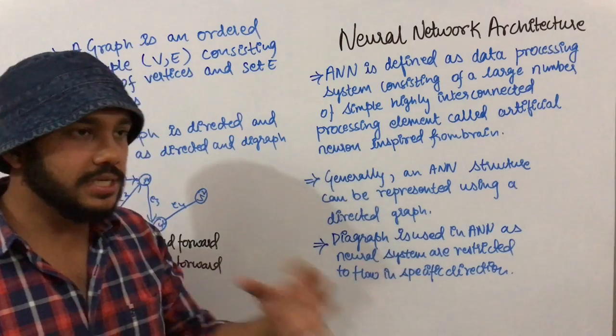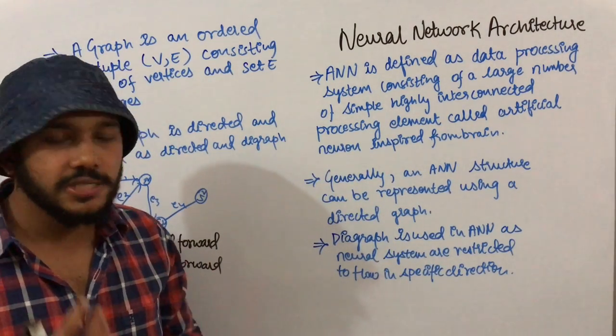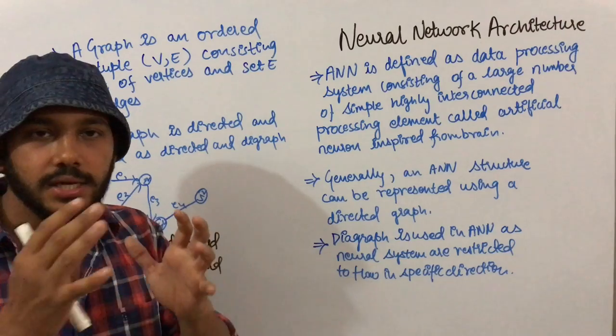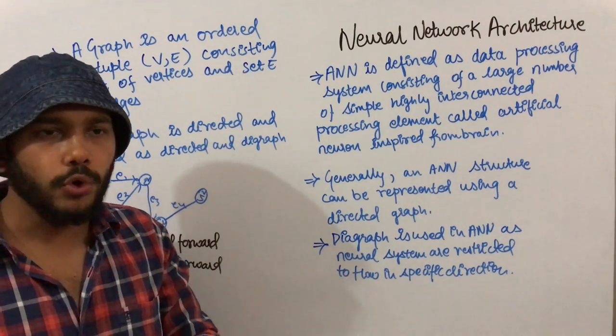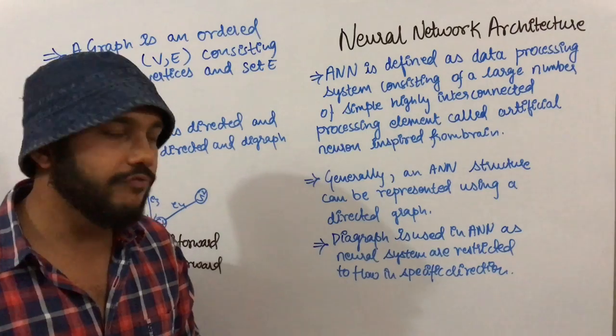We've discussed that artificial neural networks are inspired by the mind. They have a collection of many neurons present in a system, and these neurons process information.